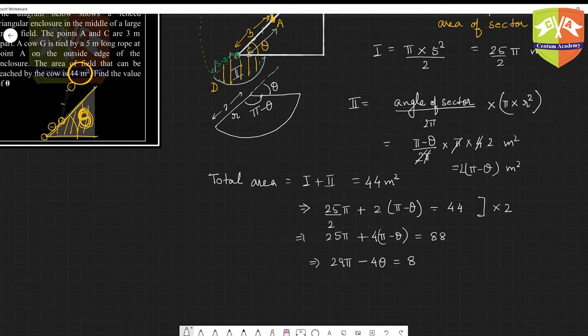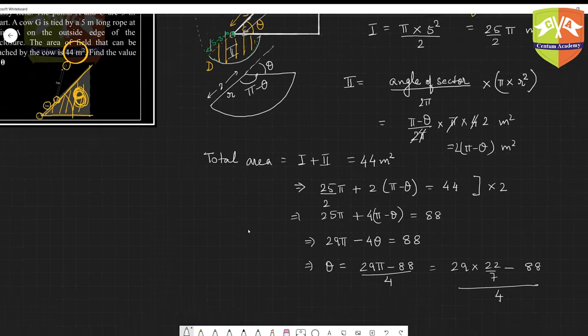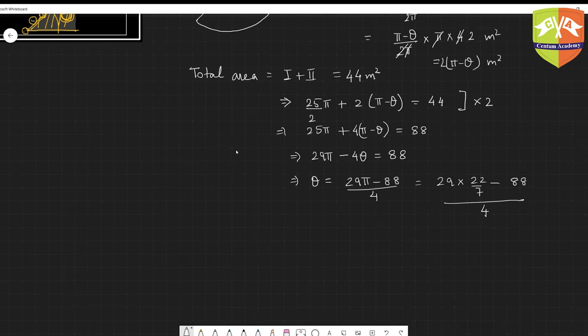What is theta? Theta will be equal to (29π minus 88) upon 4. Let's try to calculate this. This is 29 into 22 upon 7 minus 88 upon 4. I am taking approximately 22 by 7, though you could have taken 3.14 as well.